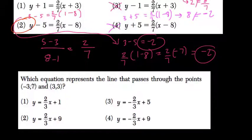Which equation represents the line that passes through these two points? Okay, so let's find the slope by subtracting our y values. Let's do 3 minus 7. 3 minus 7 is negative 4.